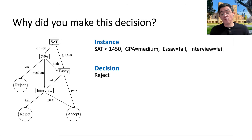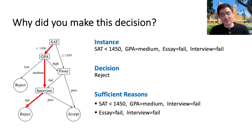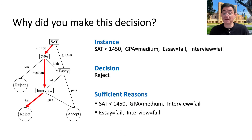We want to know why this person was rejected according to the classifier — this is where the notion of a sufficient reason comes in. It's a minimal subset of the instance that guarantees the decision. We actually have two sufficient reasons here. The first says that SAT, GPA, and interview are the reason — the essay didn't matter, so even if the person passed the essay, they would still be rejected. The second is more interesting: it says the person failed their interview and essay, so it doesn't matter what SAT score or GPA they had; given they failed on both, they will be declined.